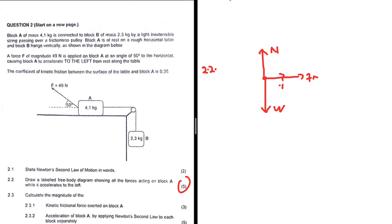A and B are connected by a light inextensible string, so we have the tension force. And a force F of magnitude 49 newtons is applied on block A — there's our applied force. Let's count: one, two, three, four, five — five marks, five forces. I think we are good to go.